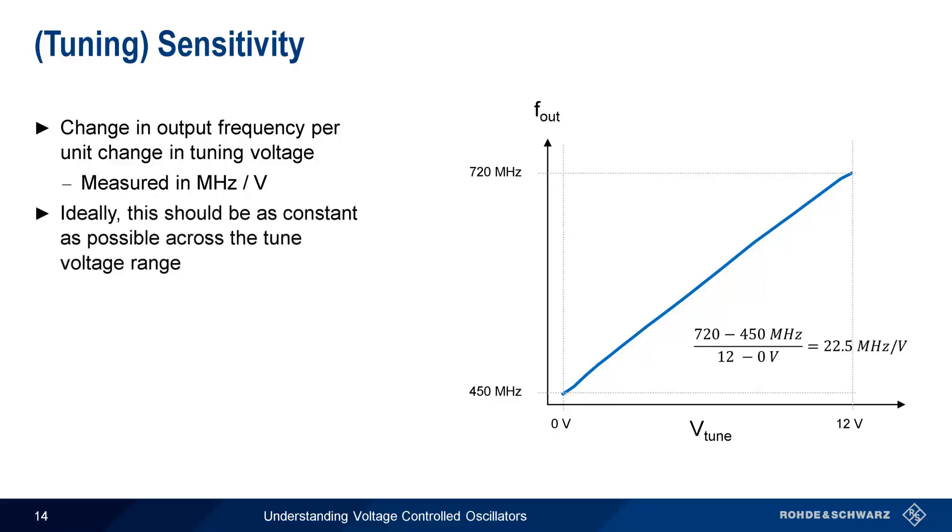Ideally, we want the tuning sensitivity to be as constant as possible over the tune voltage range. That is, we want our plot of F-out versus V-tune to have a constant slope.